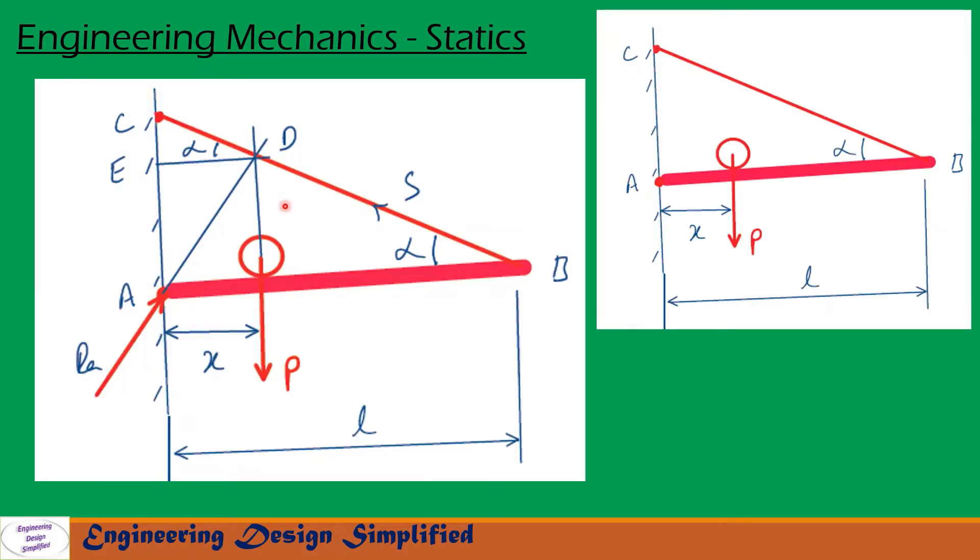First let us see forces and reactions. The weight P is acting vertically downwards and tension in this tie rod is S, marked in this direction. The angle between S and AB is alpha. AB is horizontal and distance from this wall to P is x.